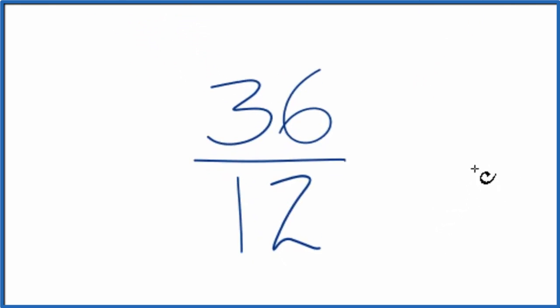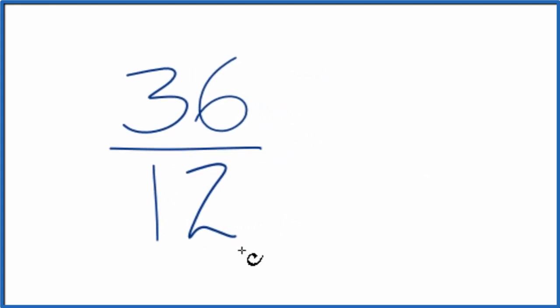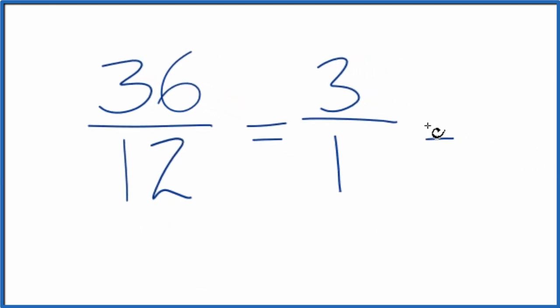We need to find a common factor. If you know that 12 will go into 36 and 12 evenly, you could just say 36 divided by 12 is 3, and 12 divided by 12 is 1. So 3 over 1 equals 3.